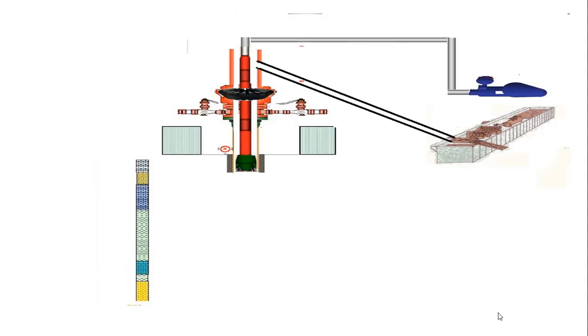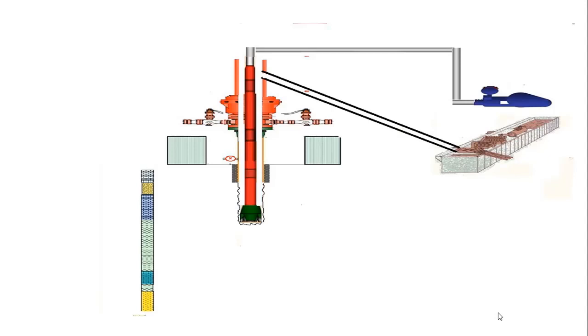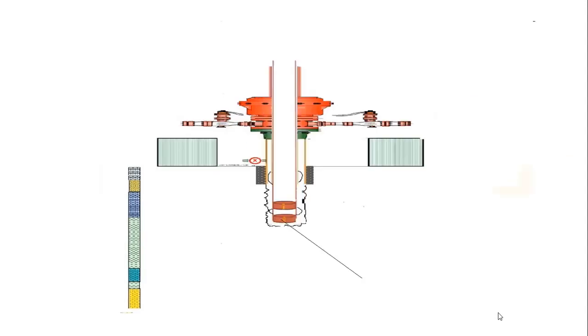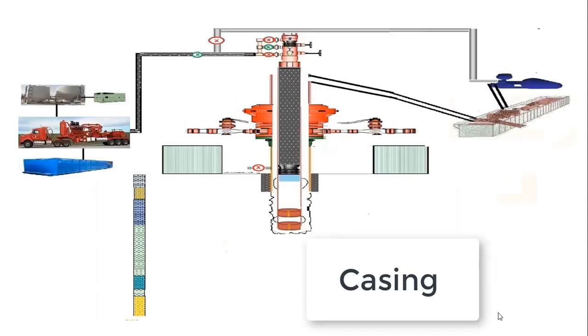In drilling section, this course will cover how diverter is installed on conductor neck flange and pressure tested, how surface hole is drilled, surface casing is run, and how surface casing cement job is performed.